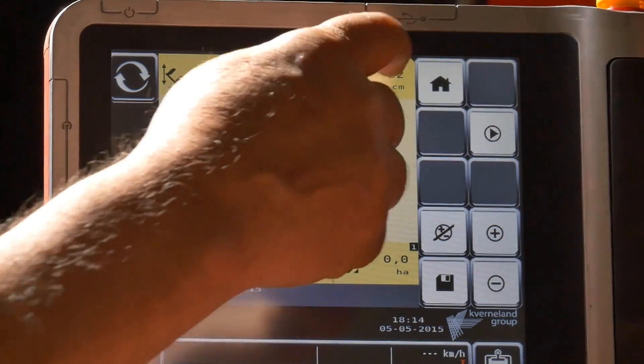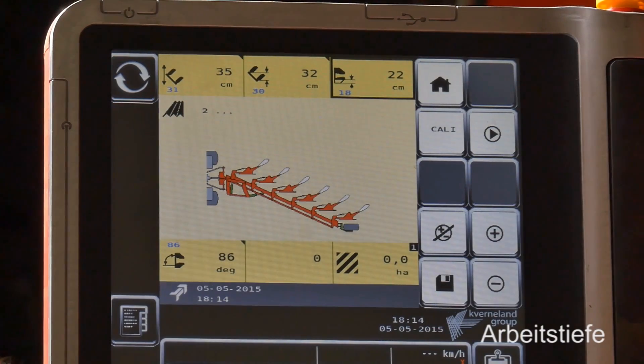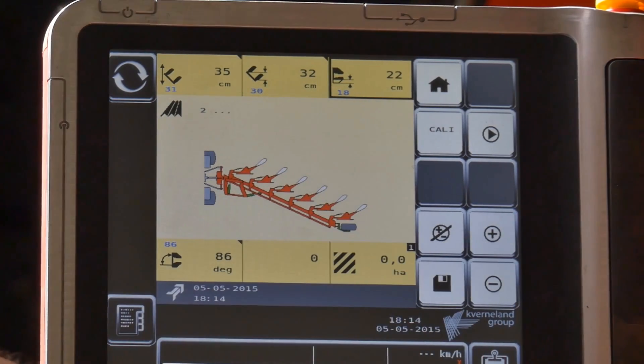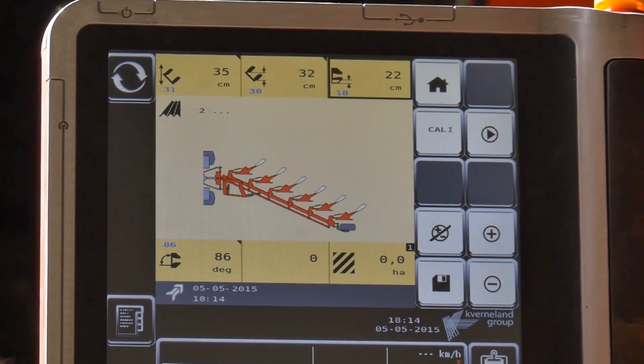And then we have the deep, the depth control. It's for the wheel. It's also the same. It's very easy to handle and with one touch you can go one centimeter deeper or one centimeter shallower.